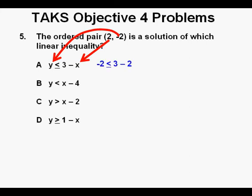For answer A with 2 for x and negative 2 for y, negative 2 is less than or equal to 3 minus 2. And that is negative 2 is less than or equal to 1. That one looks true that negative 2 is less than 1.